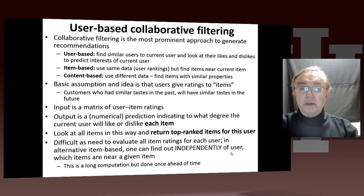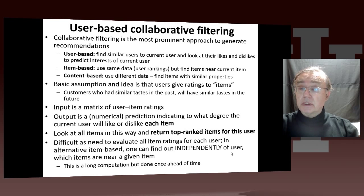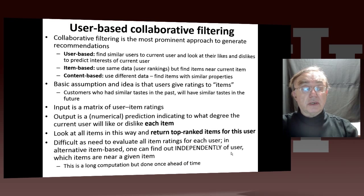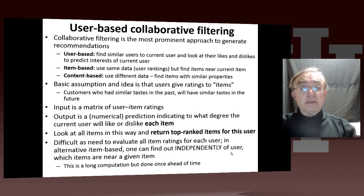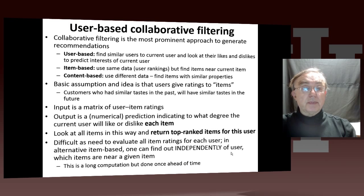In item-based, you use the same data — the rankings — but instead of finding users near your current user, you find items near the current item chosen by the user. The other method, which we saw illustrated by Pandora, is content-based: we use totally different data. We don't use the rankings; we use the properties of the items. If somebody bought a red balloon, maybe they'd like to buy a green balloon.